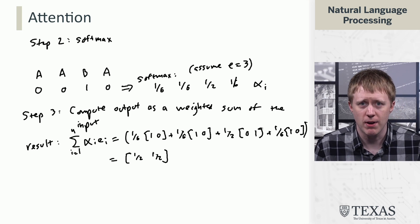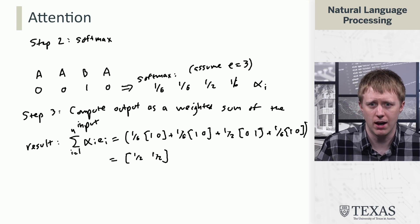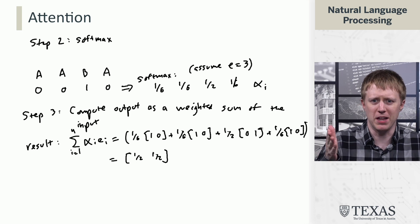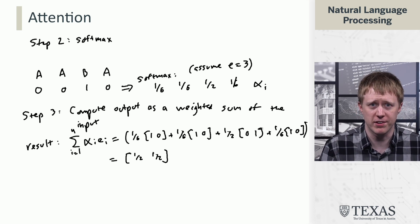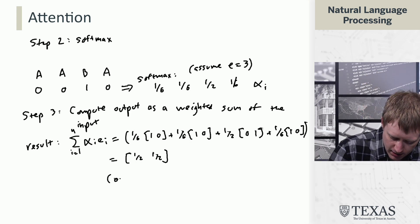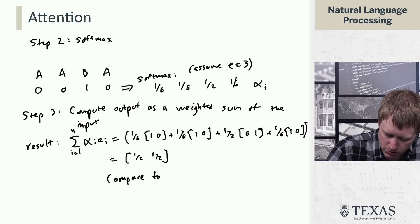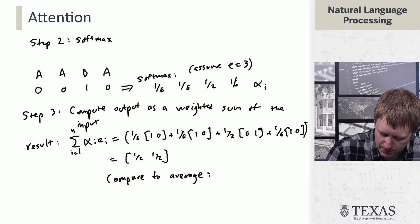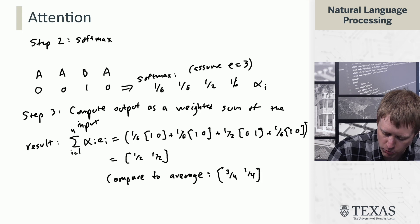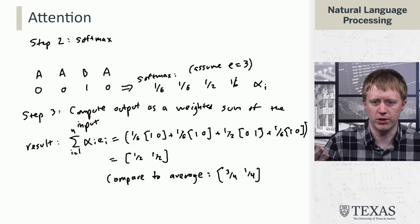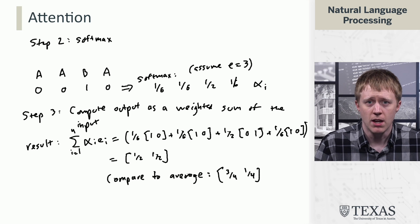So, it feels like we went through actually a whole lot of work to get a uniform split between these two positions, which represent A and B, right? But, in reality, if we compare to an average, the sort of average embedding of this would be [3/4, 1/4], right? If we just averaged over the inputs that we were given.